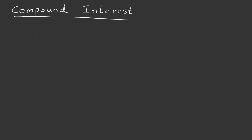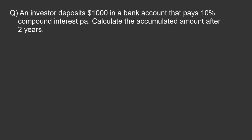Let us understand this concept with an example, and after that we will also study the formula for compound interest. An investor deposits $1000 in a bank account that pays 10% compound interest per annum. Calculate the accumulated amount after two years.